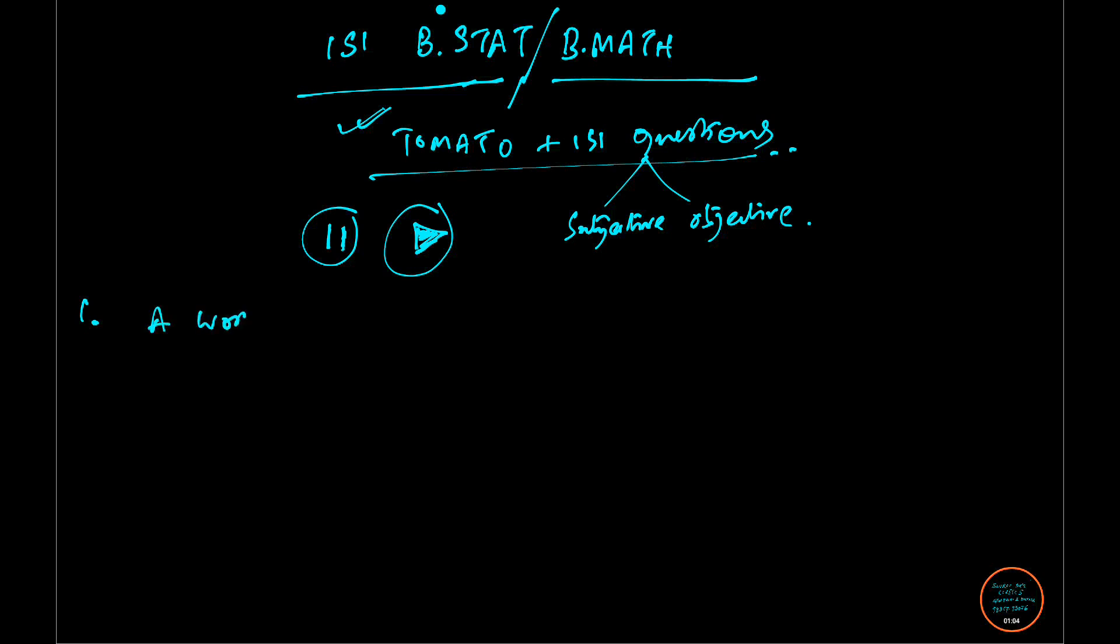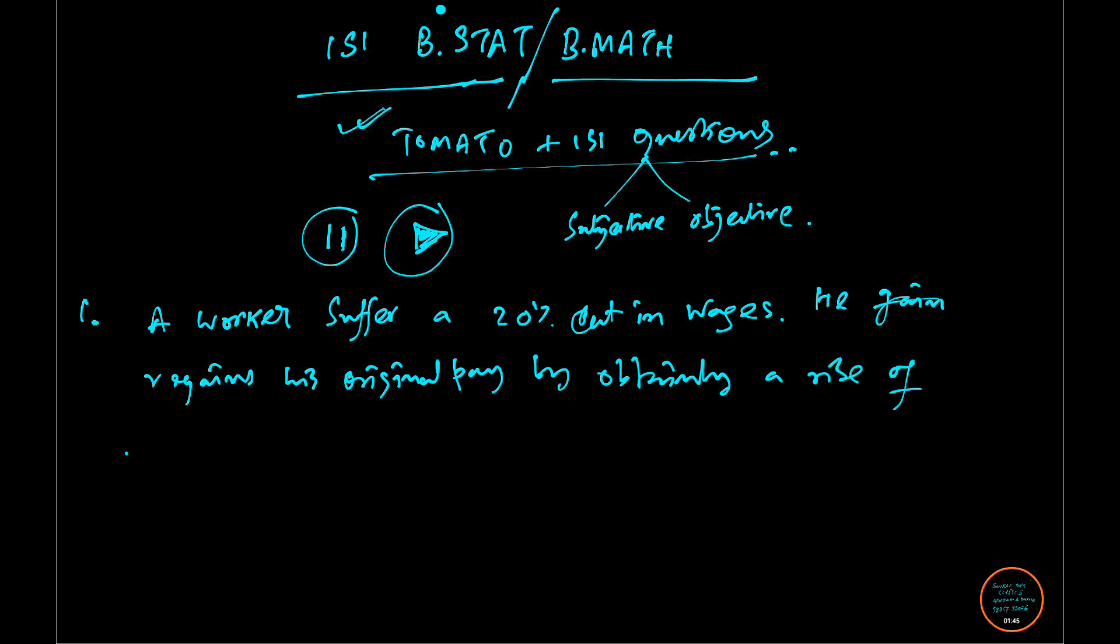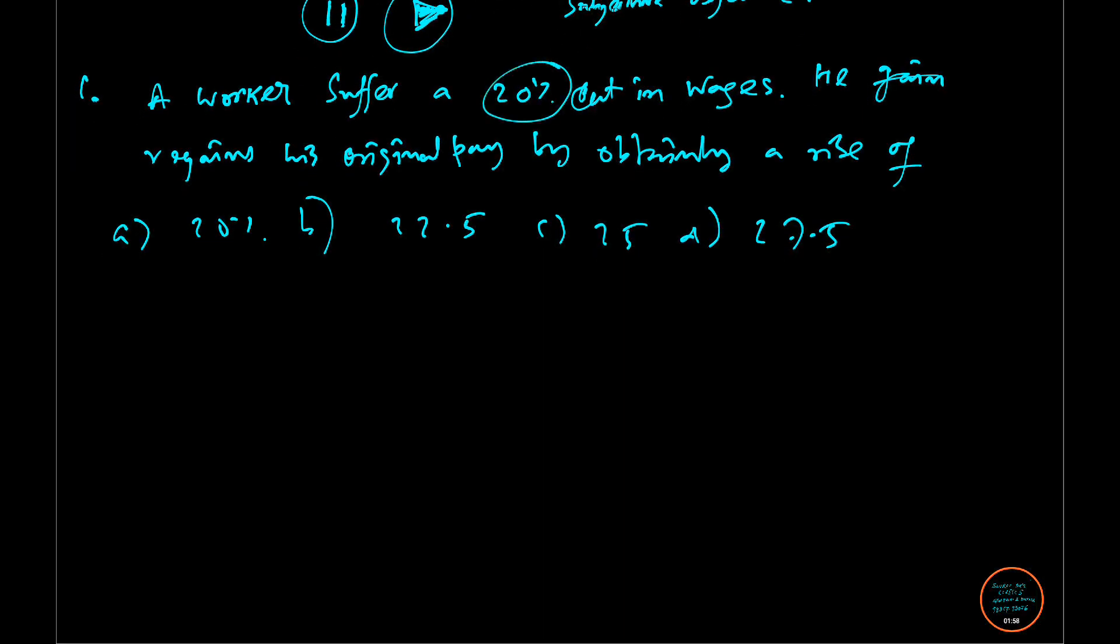suffers a 20% cut in wages. Now that's very bad. Although he is not very okay with it, he regains his original pay by obtaining a rise. This is given as 20%, 22.5%, 25%, and 27.5%. Now our very normal human mind will tell you that, okay, 20% has fallen, so the basic answer may be 20% and our answer is done. Why they have given it in Tomato and so famous book.